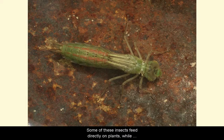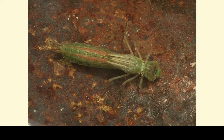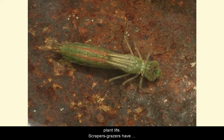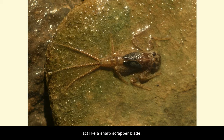In North America, around 8,000 species of insects spend some or all their lives in the water. Some of these insects feed directly on plants, while others feed on life found on the plants. There are three main ways that insects feed among a pond's plant life. The first are scraper grazers, which have special mouthparts they use to remove algae growing on the surface of plants and solid objects — the mouthparts act sort of like sharp scraper blades.